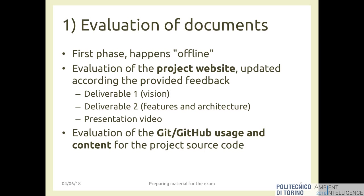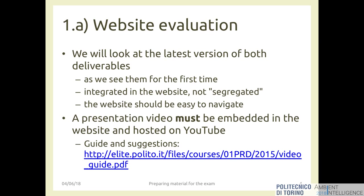The second part of this phase is the evaluation of GitHub usage and content for the project source code. We don't look at the GitHub repository of the website — we look at the GitHub repositories named with the project name ending in 'code', both usage and content.